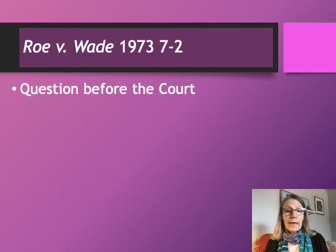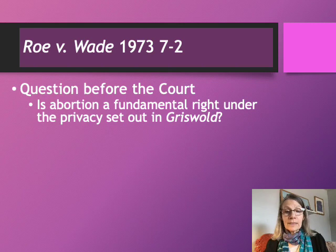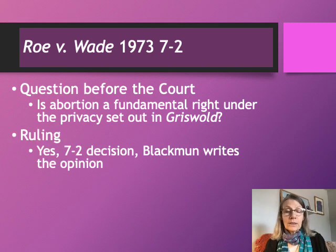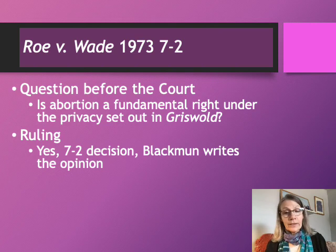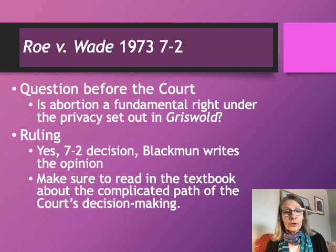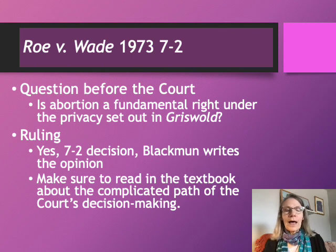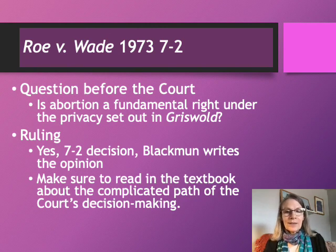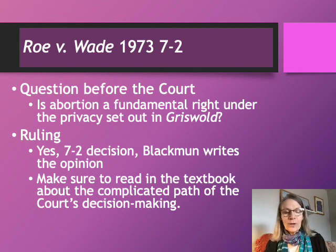The question before the court in Roe v. Wade was: is abortion a fundamental right under the privacy established in Griswold? In a 7-2 decision, the Supreme Court said yes — a woman has a fundamental right to privacy and that right applies to getting an abortion. The case was argued in front of the court twice and there was a lot of behind-the-scenes wrangling to reach a 7-2 vote. Make sure you read about the complicated path of the court's decision-making, as it gives insight into how the Supreme Court functions.